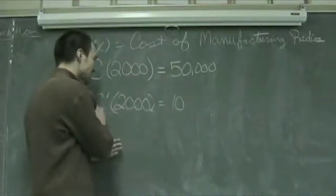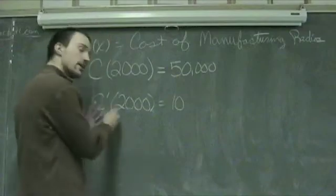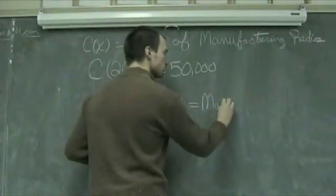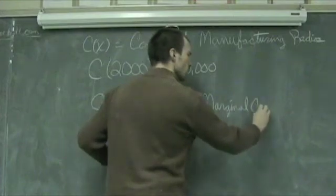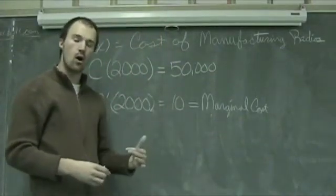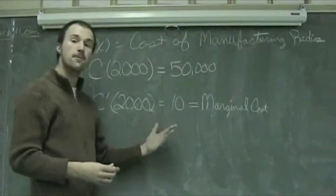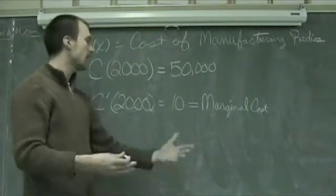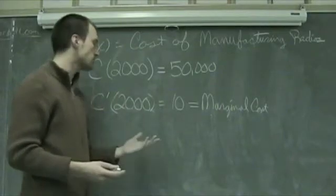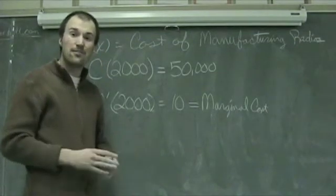Now, they also tell us that C prime of 2,000 is equal to 10 or the slope of the tangent line. Our derivative here is 10, which also means that 10 is equal to our marginal cost. And this is roughly the cost to add one more or to take one away from where we're producing 2,000. If we were to add one or subtract one, if we wanted to produce 2,001, it would roughly be $10 more. Or if we wanted to produce one less, it would be roughly $10 less. And it's going to be that over the very small interval. In 2,000, it's looking like something small probably within 10 units. About a half of a percent.